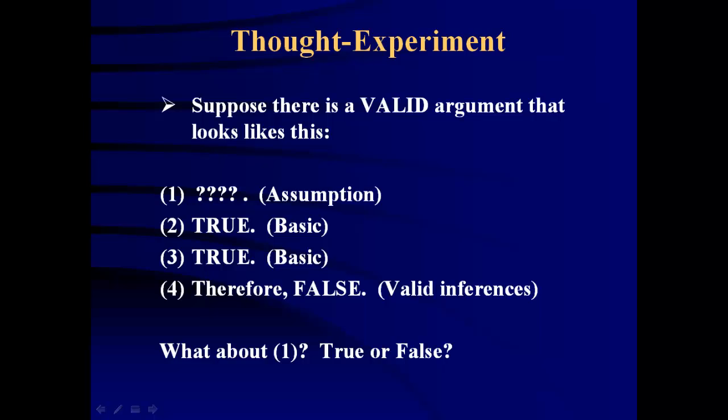But if we're clear that all the truths that we introduce are clearly true, and all the inferences are valid, and we generate, we derive, a false conclusion, we can be sure that premise, that assumption, is false. And that's the point. So if you want to show a claim is mistaken, assume it, have valid inferences for a false conclusion.